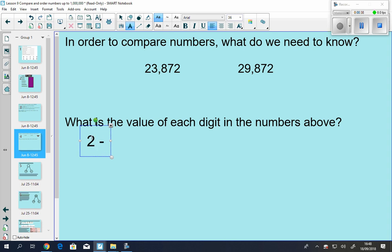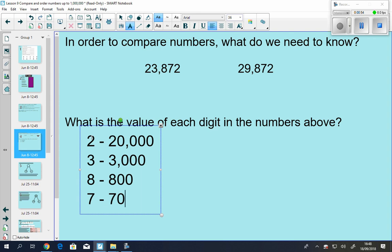So for the first number, the first 2 is worth 20,000. The 3 is worth 3,000. And you don't have to put the commas on the numbers if you don't want to, no big deal. The 8 is worth 800. The 7 is worth 70. And the last 2 is worth 2. You can call it 2 units as well if you'd like, whatever makes sense for you.